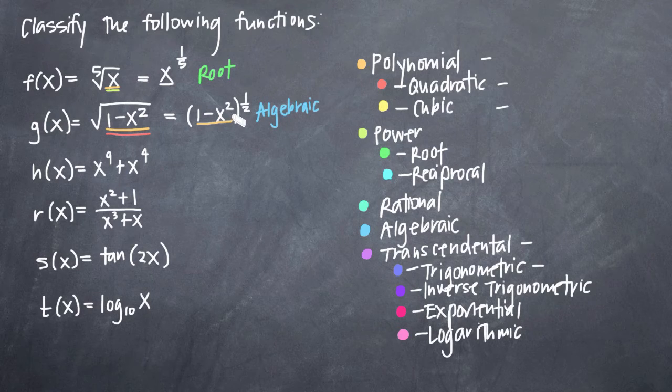Instead, we'll classify it as an algebraic function. And algebraic functions are those that take a polynomial and construct the function using only addition, subtraction, multiplication, division, and taking square roots. And as you can see, we've started with this polynomial and all we've done to it is take its square root, which is why we can classify this as an algebraic function.